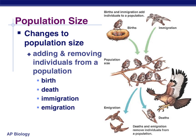We can describe a population based on its size. Population sizes change constantly, done by either adding more individuals or removing individuals. We can add through birth or through immigration, and we can remove through death or through emigration. Coming in is with an I and leaving is with an E.